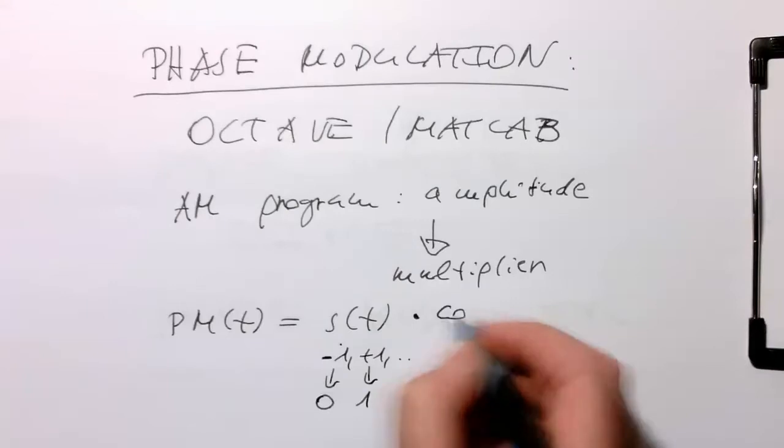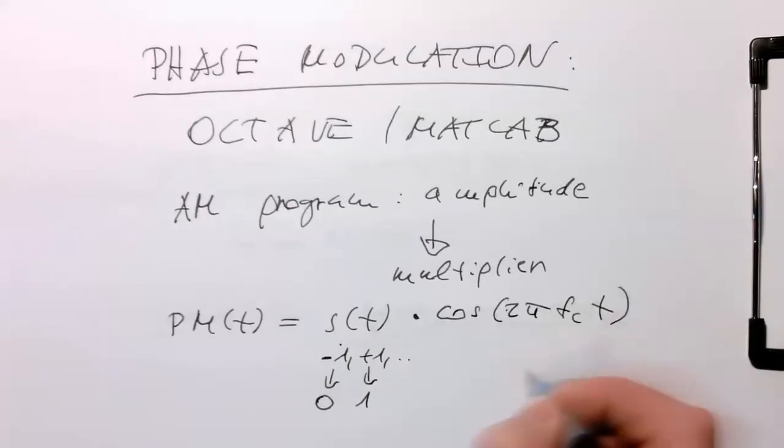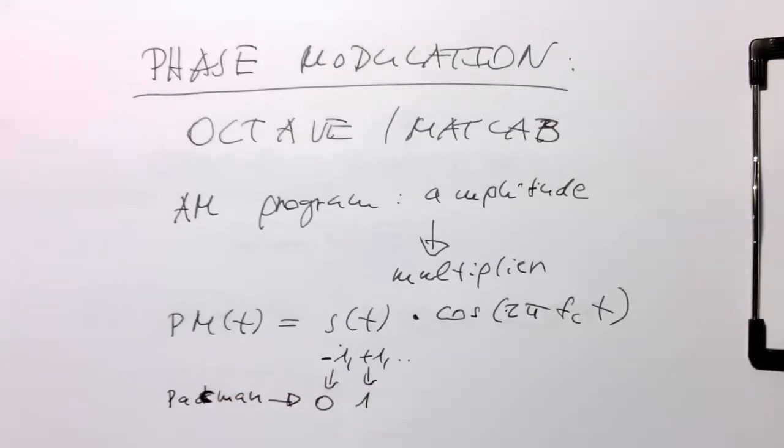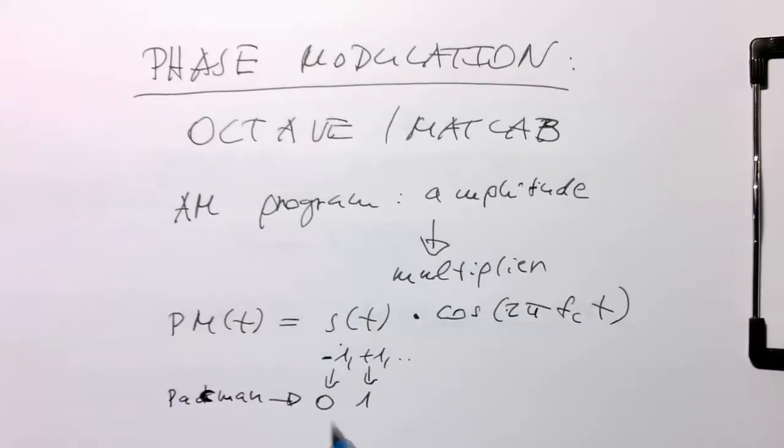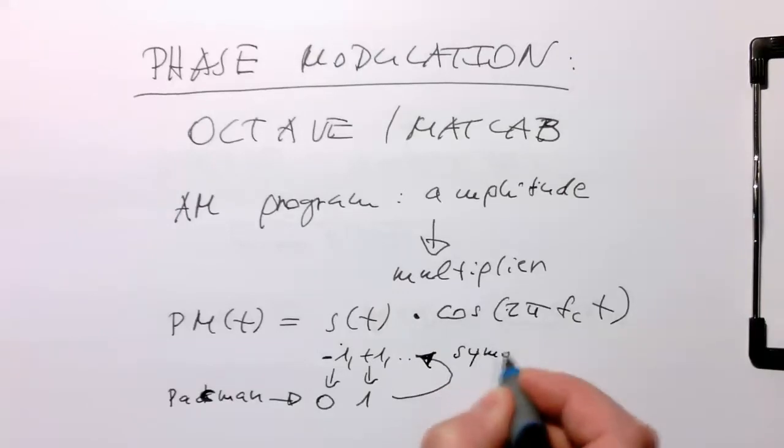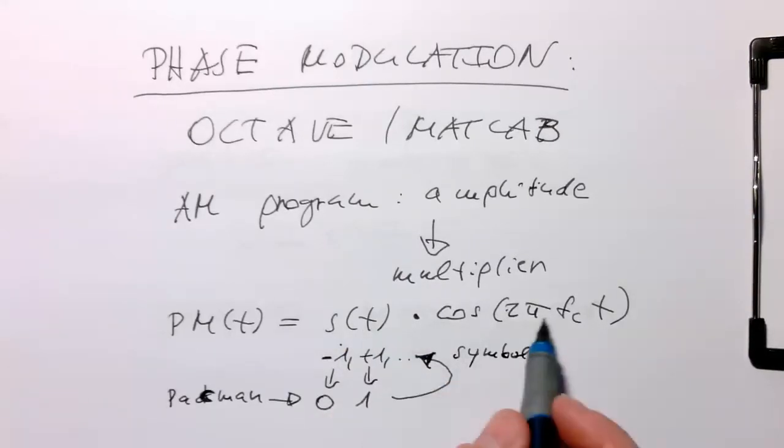And then we multiply this with our carrier cosine two pi f c t. So that's our pacman. Not with ck, it's just the c, the pacman. So the pacman is coded in our zeros and ones and then they're turned into our symbol stream here. And then these symbols are multiplied with our carrier two pi f c t, which then generates our phase modulated signal.